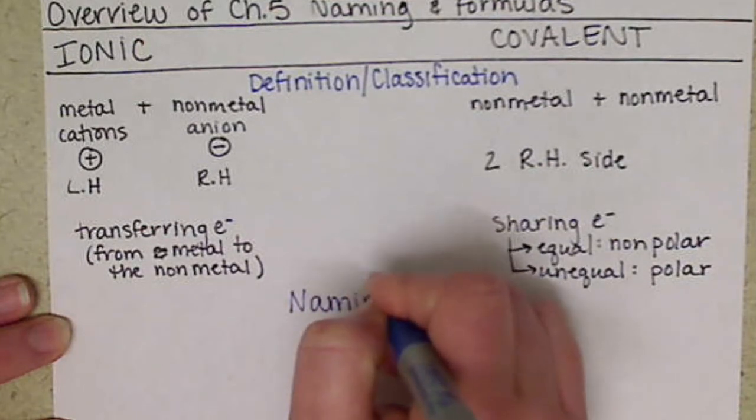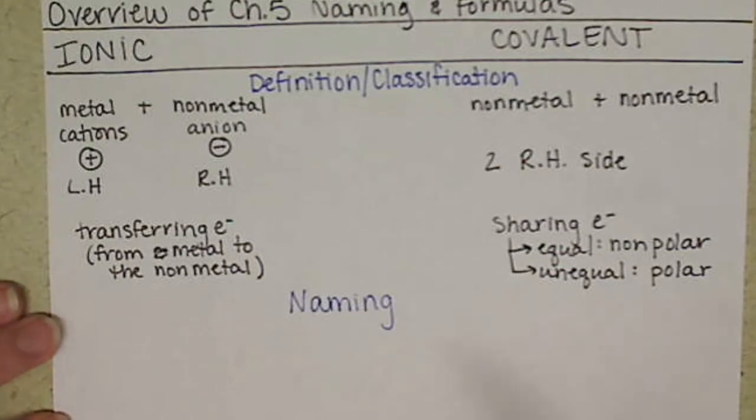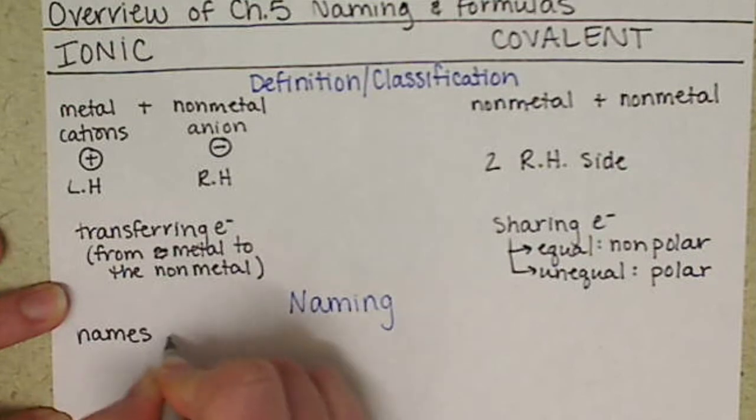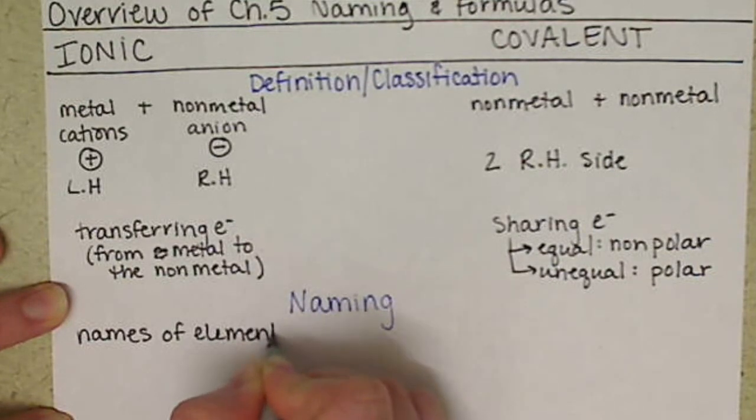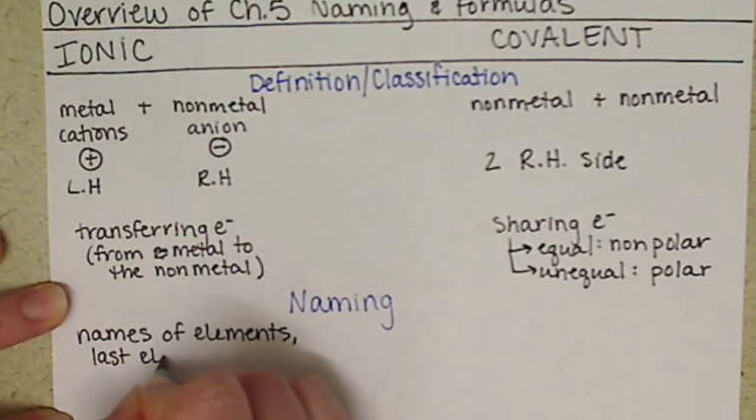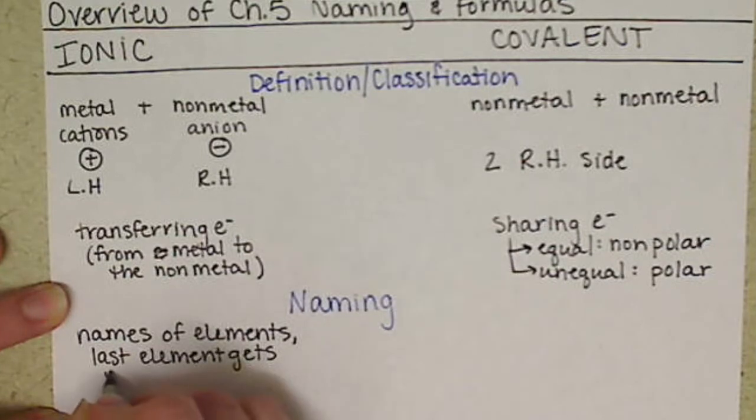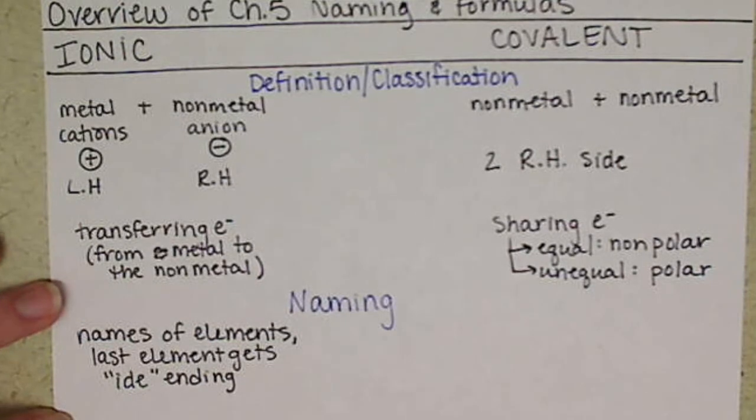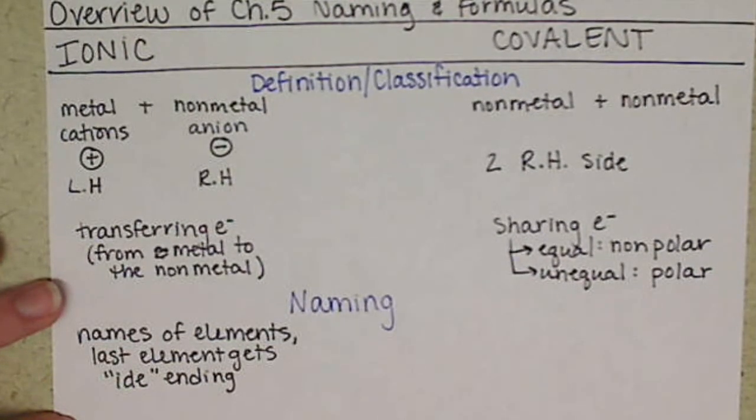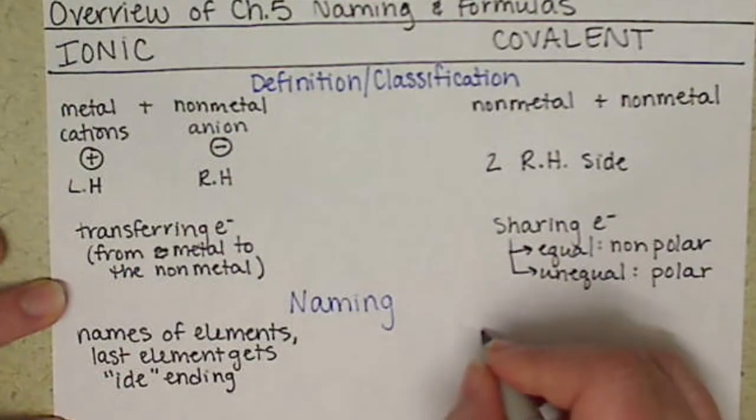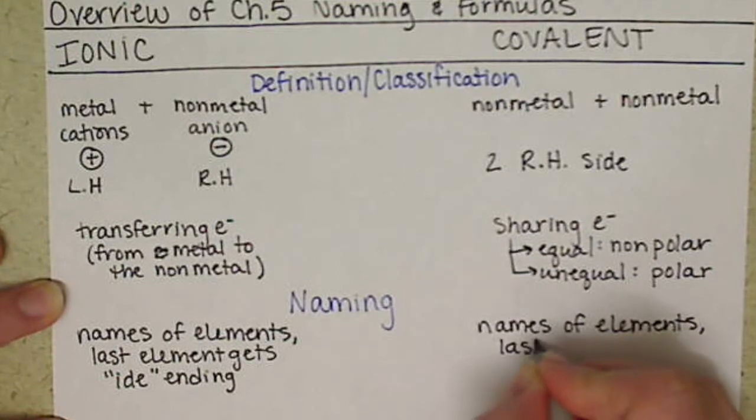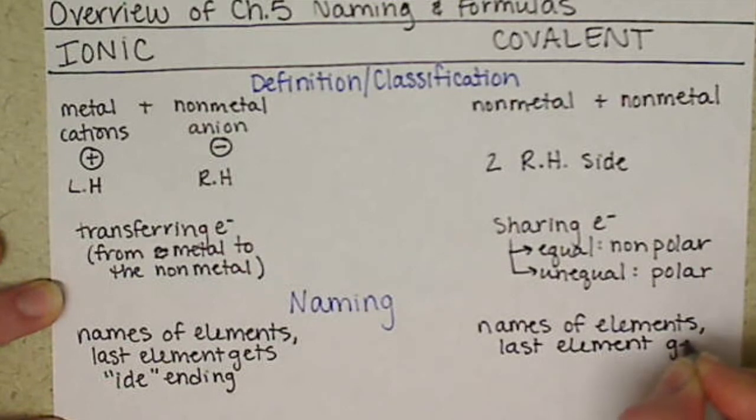Now our rules about naming for each of these. For ionic compounds, the basic naming is you do the names of the elements with the last element gets the IDE ending. In general, that's actually the same for covalent compounds. The covalent compounds also get the names of the elements and the last element gets the IDE ending.